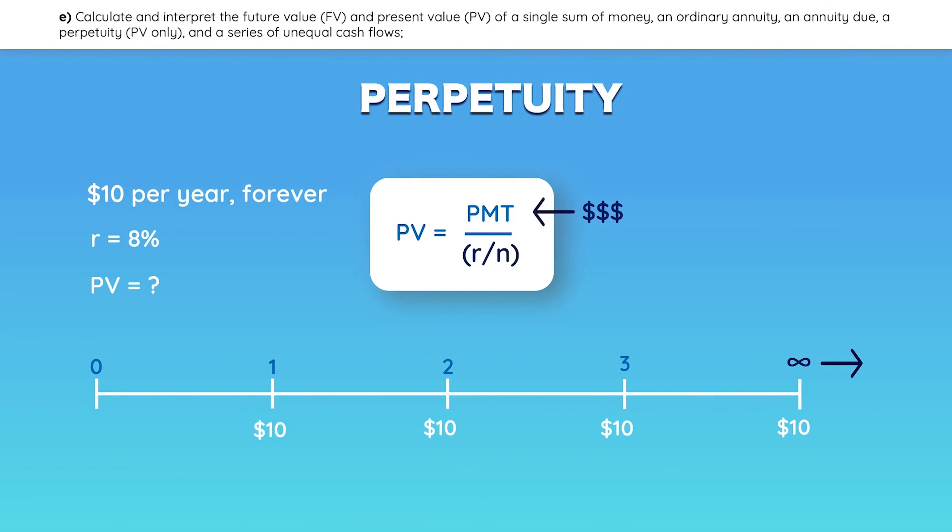Also, remember that the numerator is an actual dollar amount, not a percentage. And don't forget to enter your rate of return as a decimal. So let's plug in the values. The present value of this perpetuity is equal to 125. And just like a regular annuity, the present value for a perpetuity is given one period before the first payment.